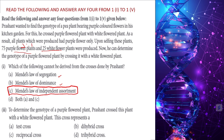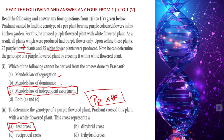To determine the genotype of the purple flower plant, Prashant crossed it with a white flower plant. When you cross with a recessive genotype — capital P small p crossed with small p small p — that is always a test cross: a heterozygous parent crossed with a recessive parent. So this type of cross is called a test cross.